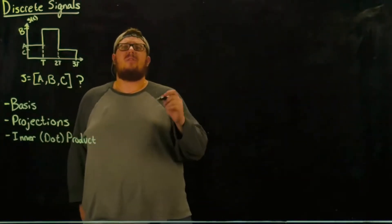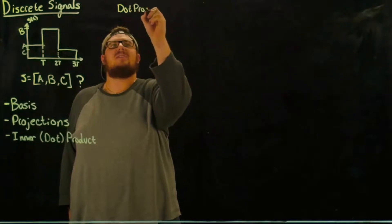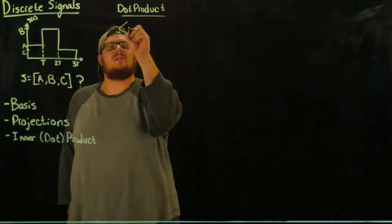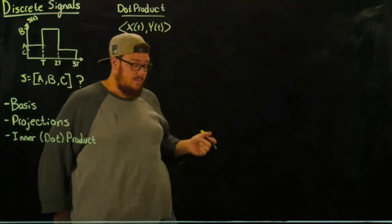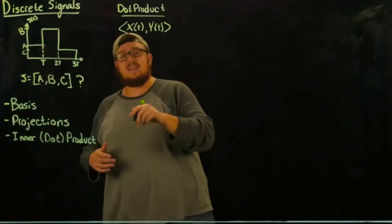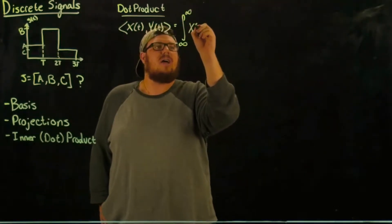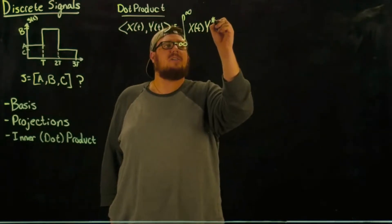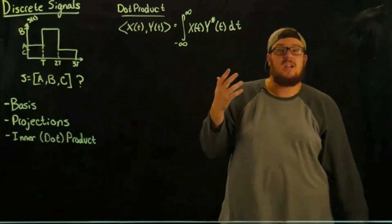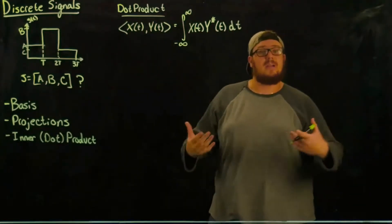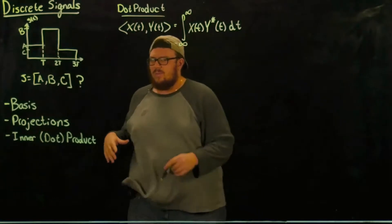First and foremost, we need to define what an inner product or dot product is for signals. The dot product of two signals x(t) and y(t), written in angle brackets, is defined as the integral from negative infinity to infinity of x(t) times the conjugate of y(t) dt. This makes sense — integrating over all values of t gives us just a number out, and since the inner product is also called a scalar product, it makes sense that we get a number out.